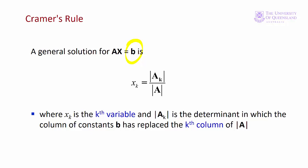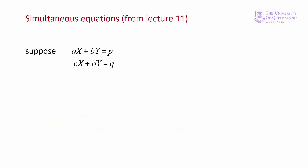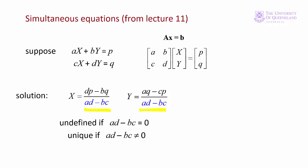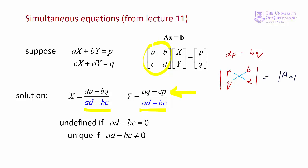We actually came across this in lecture 11 when we looked at the solution of a two-equation system. We had our two equations in matrix form and then the solutions. We saw how the denominator for the solution of each variable is the determinant of the matrix of coefficients. Now let's look at the numerator for x: dp minus bq can also be expressed as the determinant of a matrix — in this case the matrix with entries p, q in one column and b, d in another. The numerator is d times p minus b times q, which we call the determinant of A_x, because this is the matrix of coefficients with the first column replaced by the right-hand side constants.